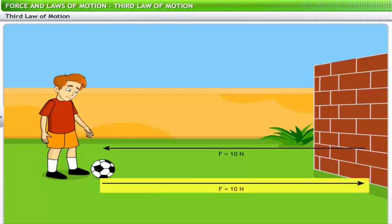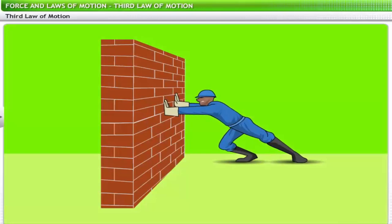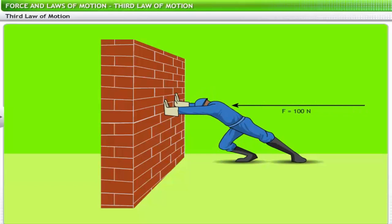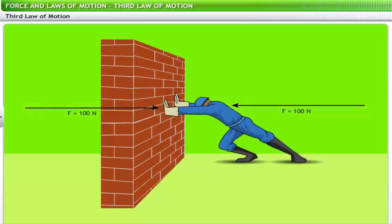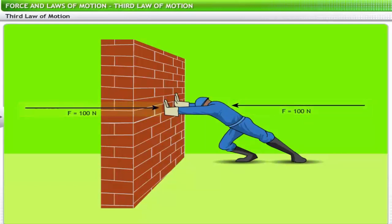In the second situation, the man pushes the wall with a force of say 100 newtons. The wall also pushes back with a force of equal magnitude. Both these forces act in directions opposite to each other — one force acts on the wall while the other acts on the man.